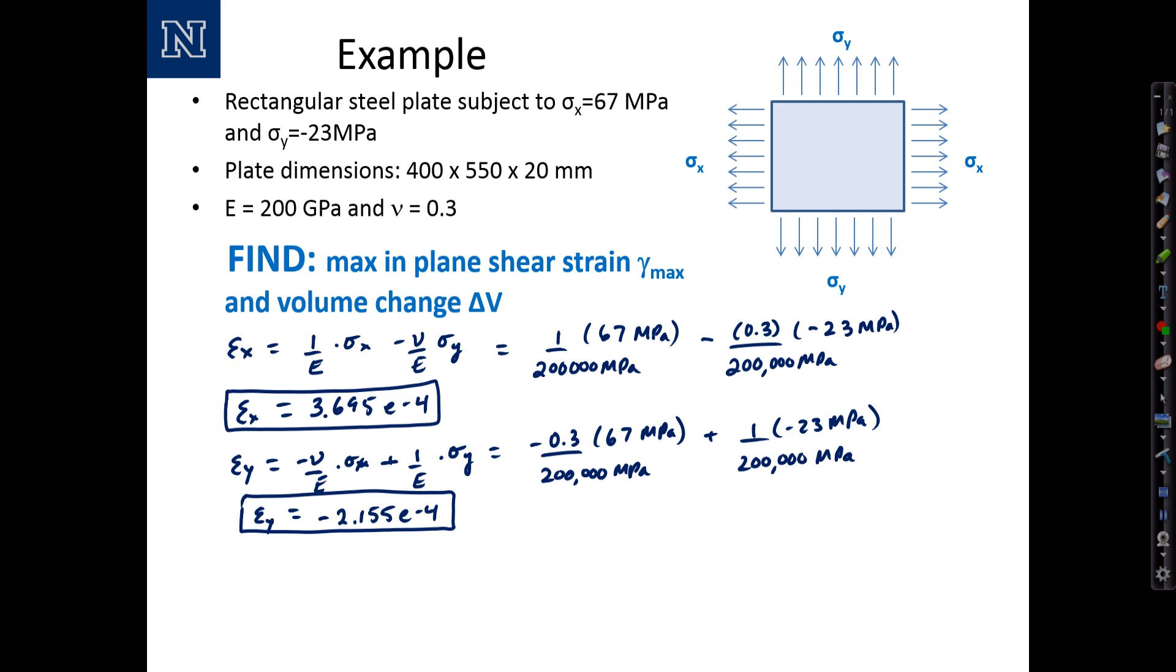Now using Mohr's circle of strain. We can compute an equivalent Mohr's circle where epsilon x, epsilon y, and gamma xy over 2 are the properties on Mohr's circle. This is a biaxial strain state, we don't have any shear strains, so therefore we can conclude that epsilon p1 is equal to epsilon x and epsilon p2 is equal to epsilon y, which means we have a Mohr's circle of strain with the 3.695 and the negative 2.155 out here. Those are principal strains.